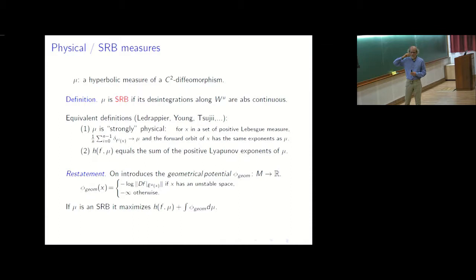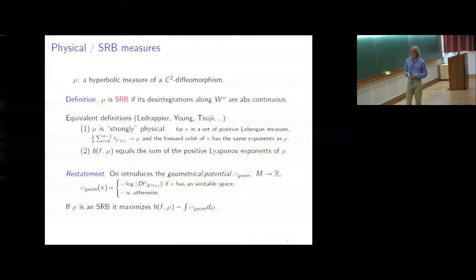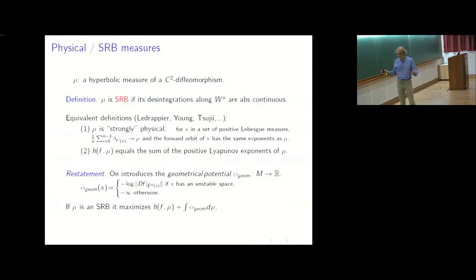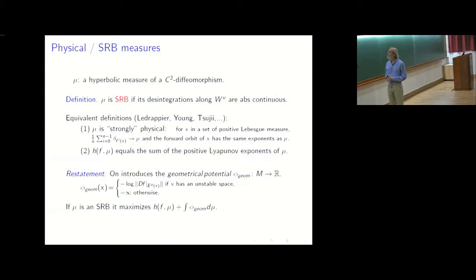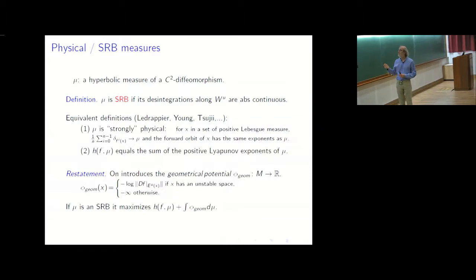There is a stronger notion of physicality: it says that not only do you require a basin with positive Lebesgue measure — points whose orbit converges to that measure — but you also require that the Lyapunov exponents for these points exist and converge to the exponents of the measure. If you have such a measure it has to be SRB.